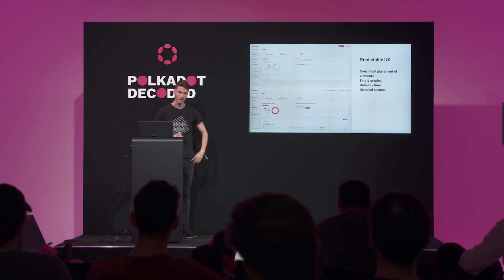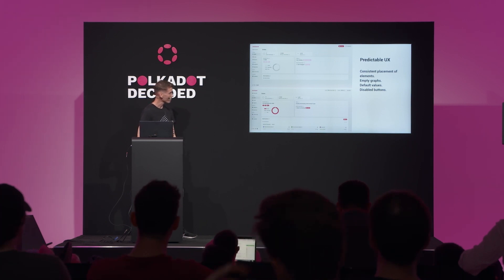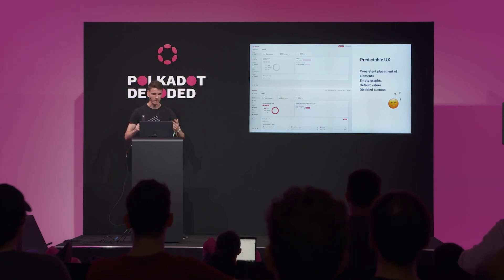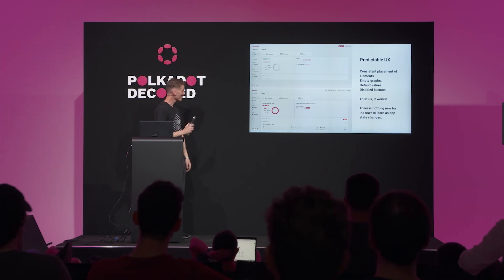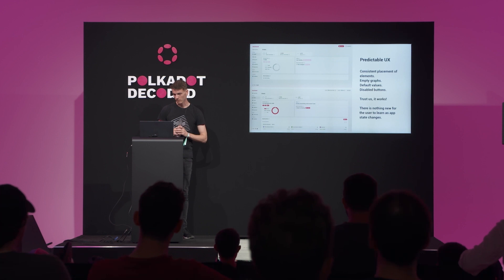Predictable UX has been one of the main themes of the design. We want to keep the placement of elements consistent throughout the dashboard. We do stuff like empty graphs, default values, disabled buttons. This might sound a bit wrong — why would we clutter our UI with dead elements? But it works. If we look at these two screenshots, the first one is completely inactive with no accounts connected, and the bottom one is a fully active staking position. But the interface remains consistent and predictable. There is nothing new for the user to learn as the app state changes.